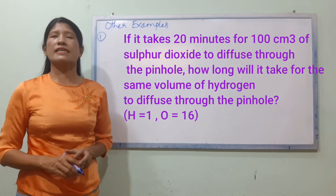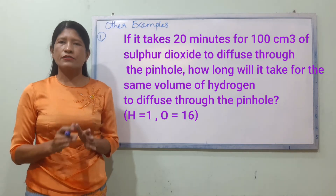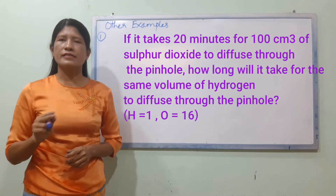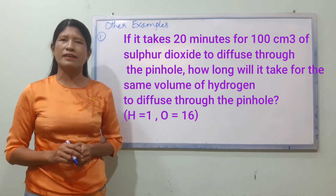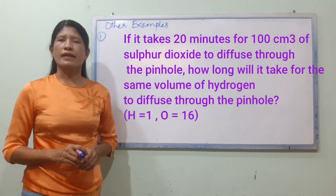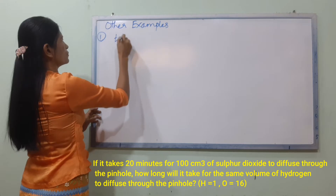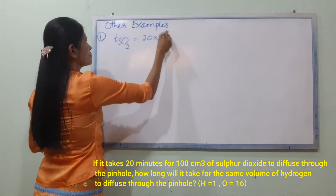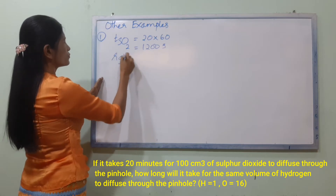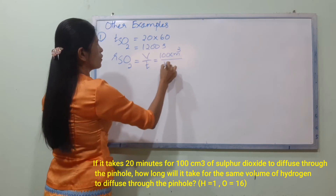Exercise 18 — a pinhole allows 100 cm³ of a gas to escape. SO2 takes 1200 seconds (20 minutes) to diffuse. The rate of diffusion of SO2 is R_SO2 equals volume over time: 100 cm³ divided by 1200 seconds.